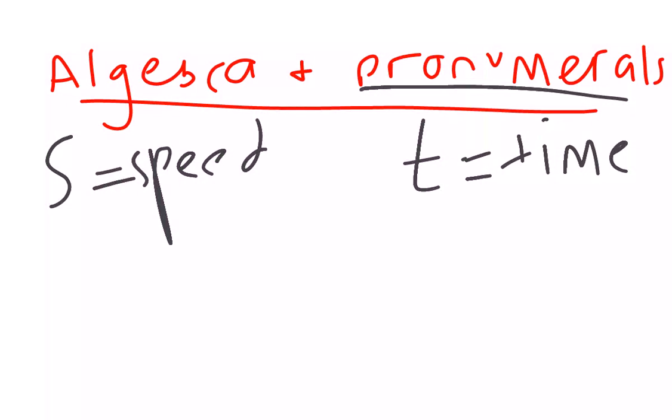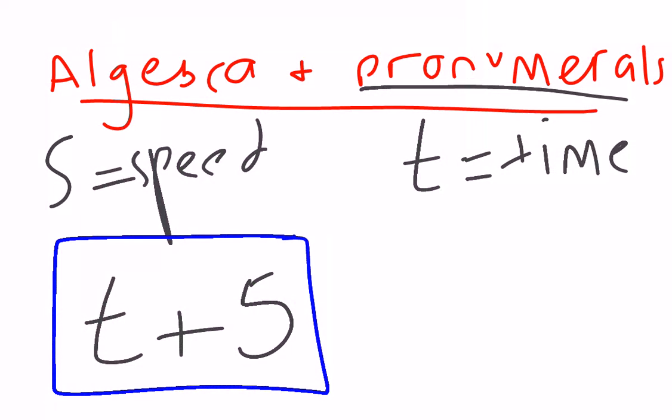For example, if at the end of this video, I know I'm then going to have to go back and add another five seconds worth, that would be t, the time that the video takes, plus that extra five seconds, t plus 5. What I've written here is an expression. It's just a sum that uses pronumerals and can use numbers as well.